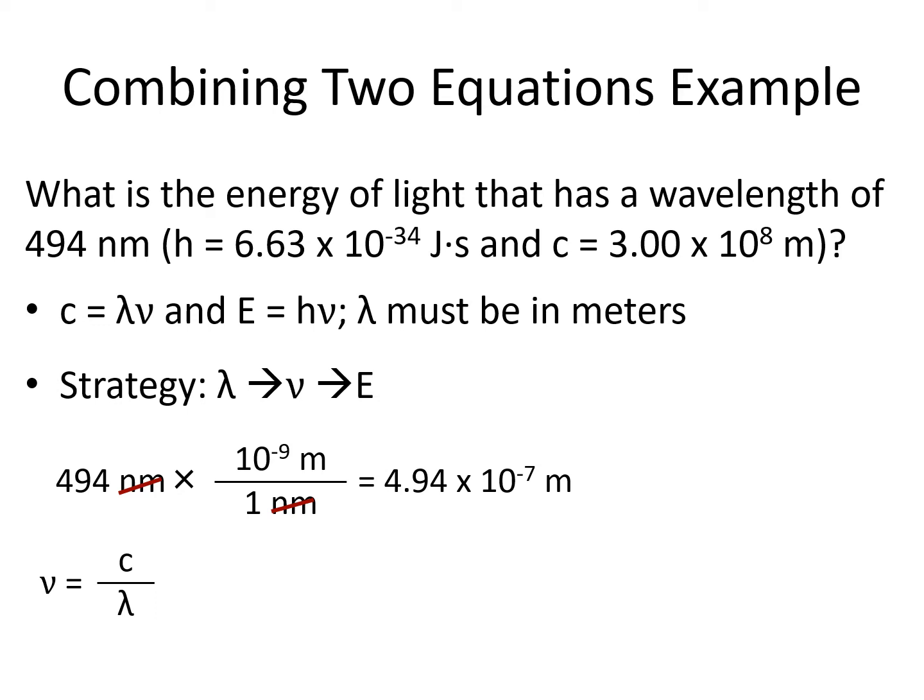We plug in the speed of light for c, and we plug in our wavelength in meters for λ. Notice meters in the numerator cancels out with meters in the denominator, leaving us with units of per second for our frequency. Our frequency is 6.0729 times 10 to the 14 per second.